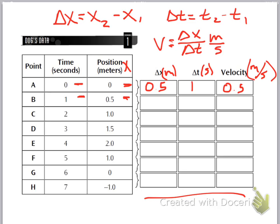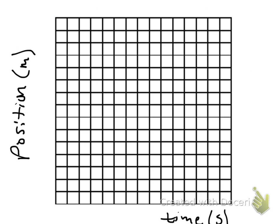Take a couple minutes and fill out the rest of this table with all your values. Keep in mind it's always the second one minus the first one, so the ones further down might throw you for a loop if you're not careful. When you're done filling out the table, you're going to take that information and move on to your first graph.